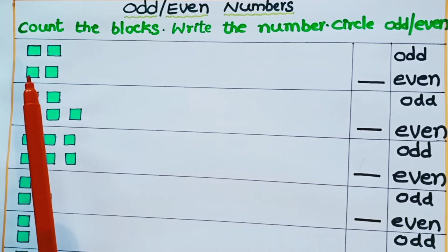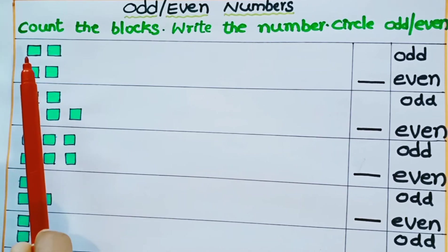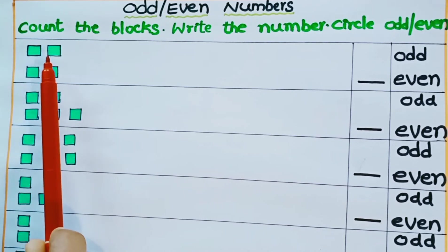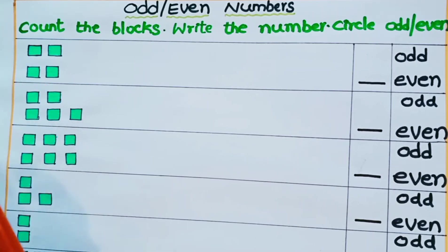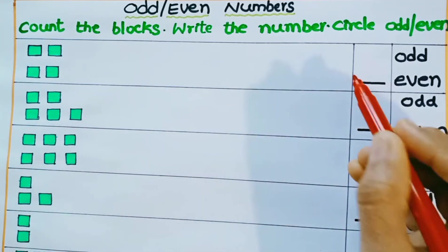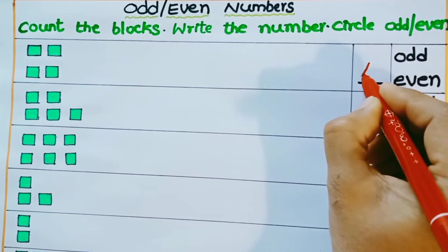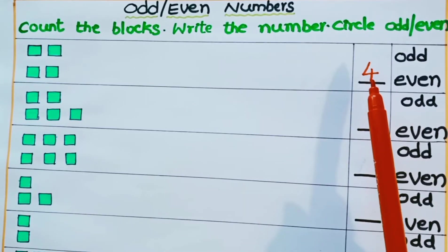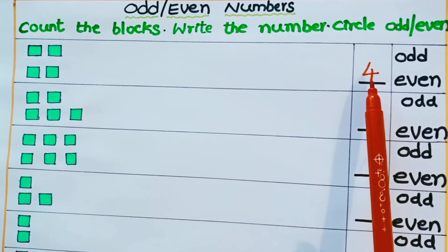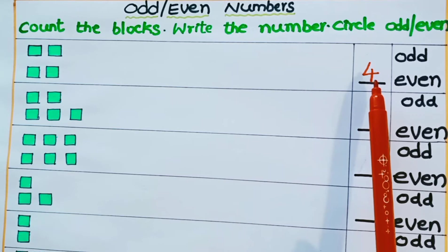Look here children, how many blocks are there? 1, 2, 3, 4. There are 4 blocks. Now tell me, is 4 an odd or even number? What is an even number? Even numbers can be divided into pairs.